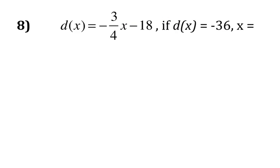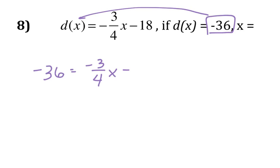And number 8, it says d(x) is equal to negative 36, so that's going to go right in there. So negative 36 is equal to negative 3/4x minus 18. And so what I need to do is think about what is going to go first. So if I think about putting my finger over this part of it, I'm going to be adding 18 first of all. So I'm going to add 18, so I'll have negative 18 is equal to negative 3/4x.